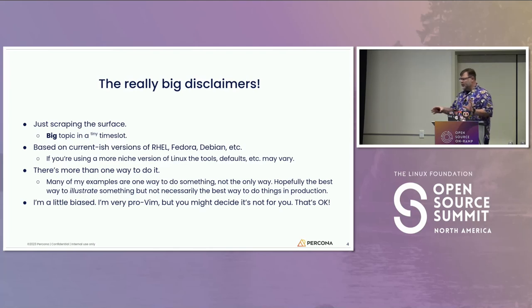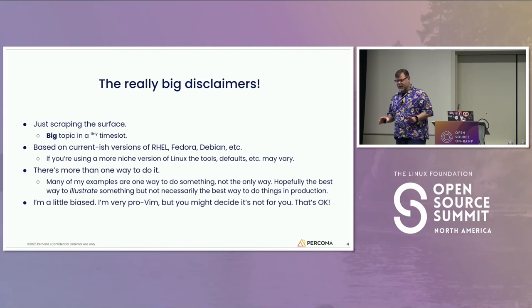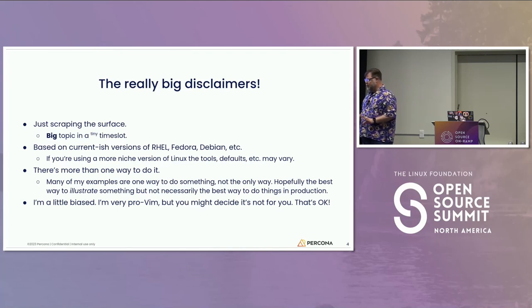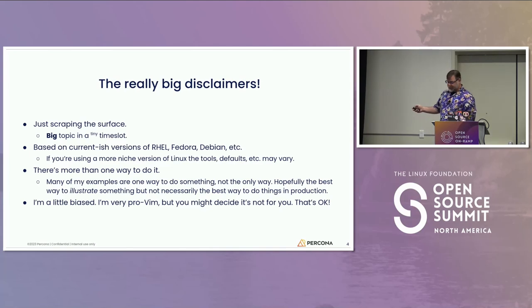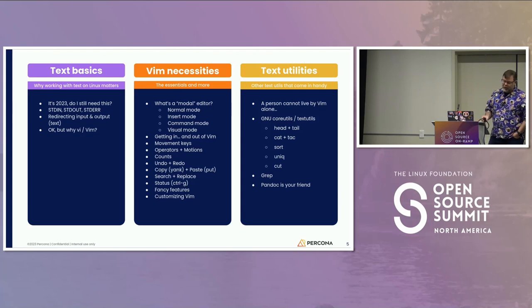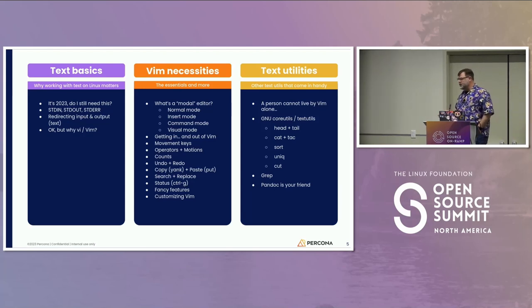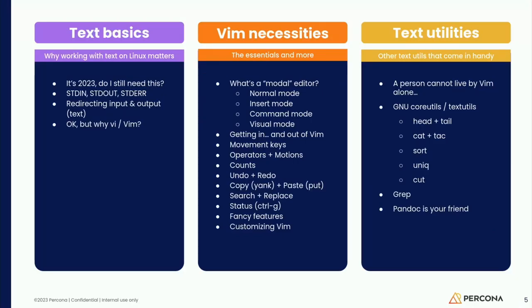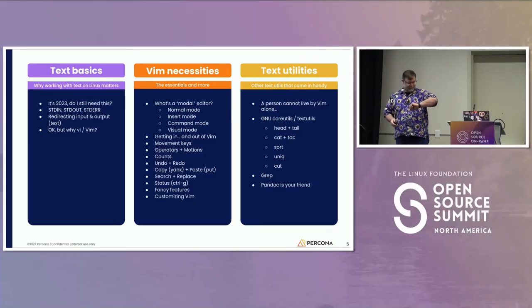There is always more than one way to do it. I'm going to talk about the ways I do things, but there are probably 10 different ways to do the same things in VIM. I was at Red Hat for about nine years, and we were trying to make it easy to administer systems for people who weren't Linux administrators. So I didn't assume people were already comfortable with the command line. Here's what I'm going to cover: basic reasons to learn text on Linux, piping and operators, then VIM, and then some text utilities.